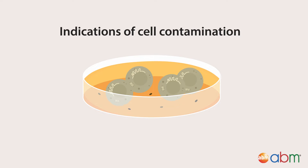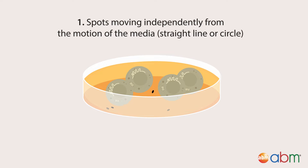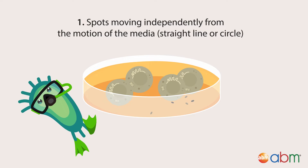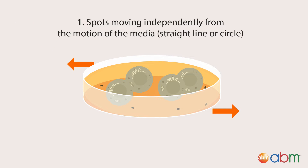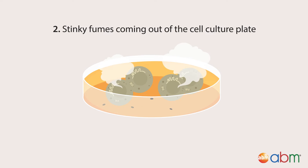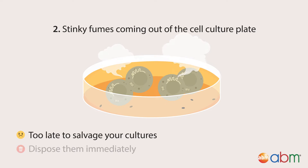Here are indicators that the black spots may actually be bacterial contaminants: if the dark spots move independently from the motion of the media. All particles jiggle at high magnification due to Brownian motion, but many bacterial contaminants do actually swim. If you see a particle moving any distance in a straight line or circle, you're likely looking at bacterial contaminants. If you smell something funky, when bacterial contamination is full-blown it will start to smell. At this point, it is too late to salvage your cultures and they should be immediately disposed of properly to avoid spreading the contamination.